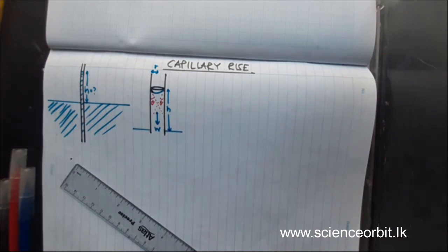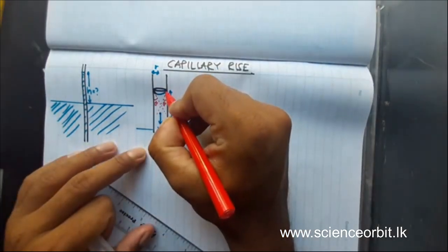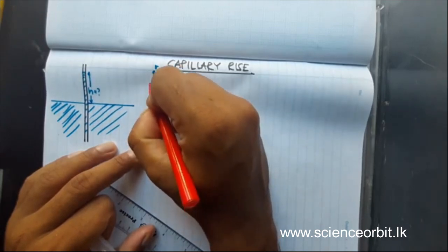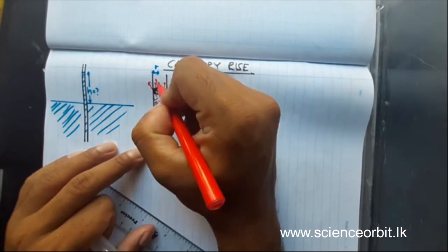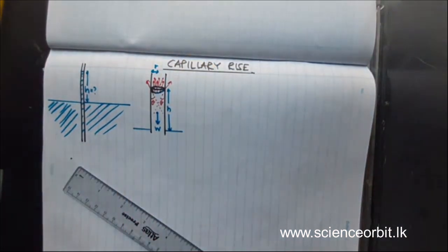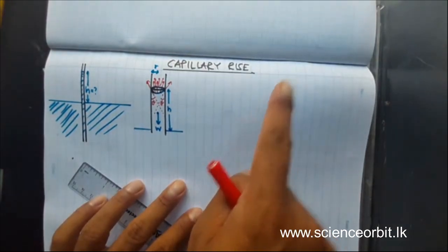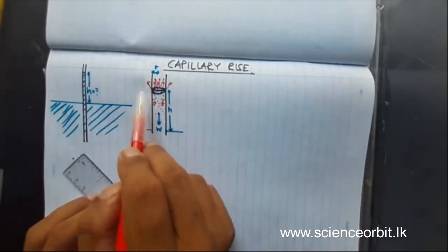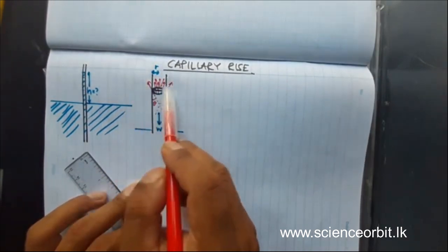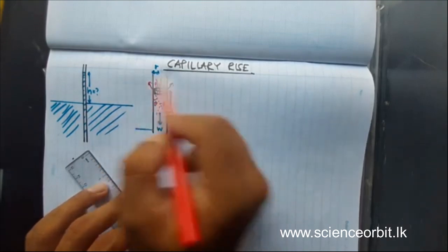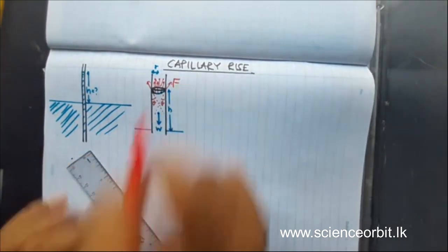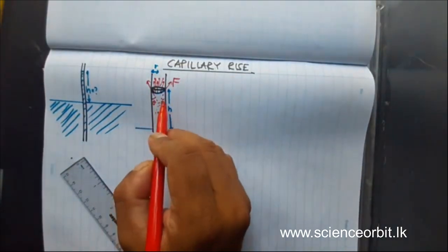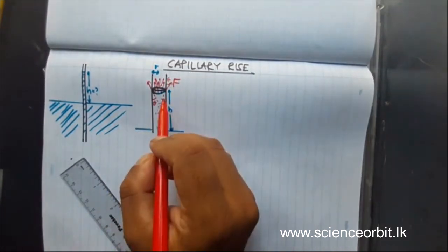That upward surface tension force will be acting in this direction — on both sides. When you have the surface like this, the force acts out of the surface depending on the contact angle. If the contact angle is 0, it will be acting precisely vertically upward. But here we have taken a random contact angle, so the force will be acting at an angle. We take this total force as F. The problem is F is not vertical — it is at an angle. If this angle is theta, this angle is also theta — vertically opposite angles.